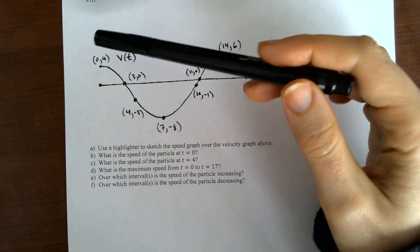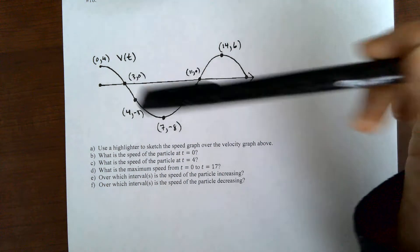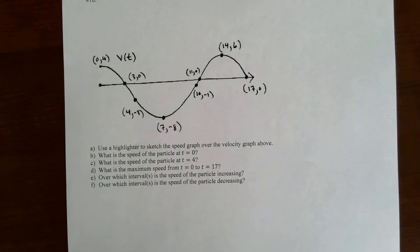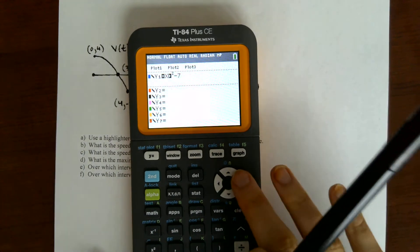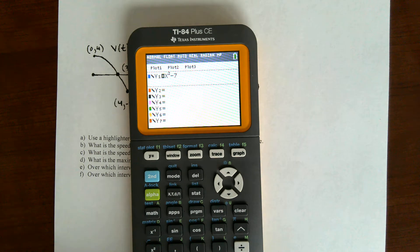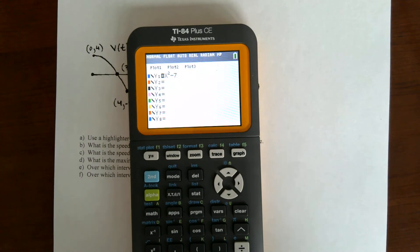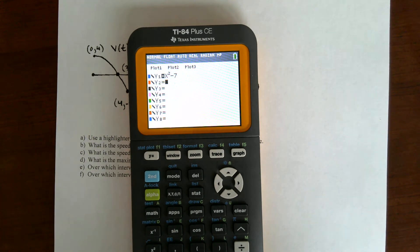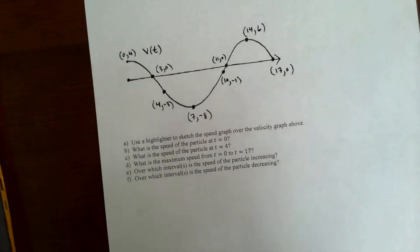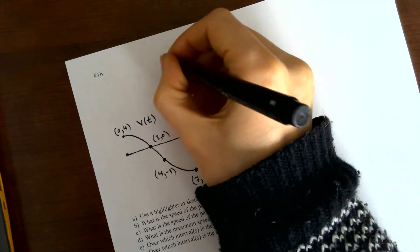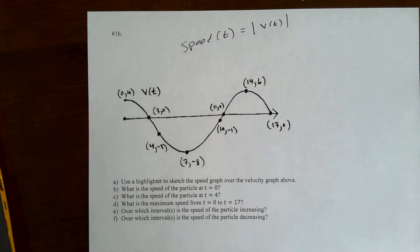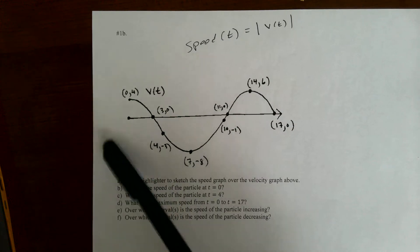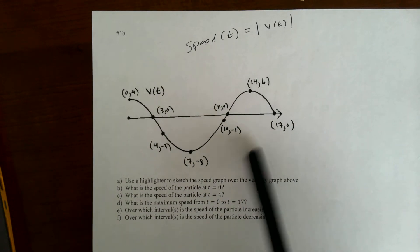You do want to keep the points that I show you. So let me do a little preliminary thing here. The graph of x squared minus 7 versus the absolute value of x squared minus 7. Because remember, speed of t is equal to the absolute value of the velocity of t. So we want to sketch the absolute value of this graph.